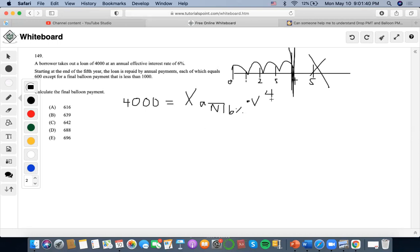Now we just want to calculate, so it says that each of which equals, okay so now we know that this is 600. So we just need to calculate what n is. So what we're going to do is I'm going to first get rid of this by multiplying this by 1.06 to the fourth. I'm going to do 4000 times 1.06 to the fourth, which is 5049.9784.